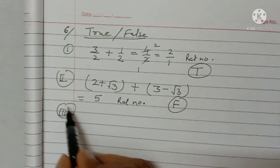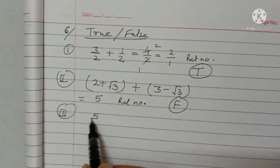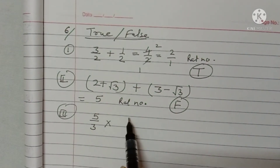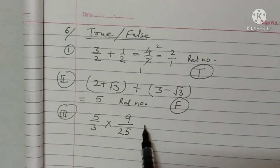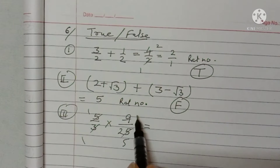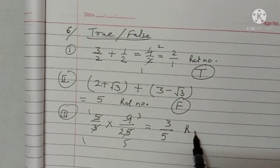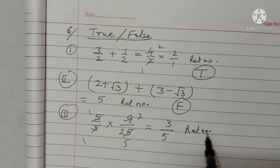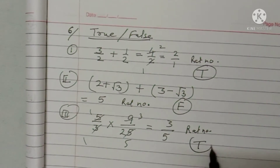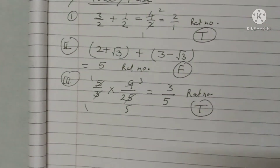Third: the product of two rational numbers is rational. Take 5/3 × 9/25. After simplification you get 3/5, which is a rational number. So the statement is true — the product of two rational numbers is always rational.